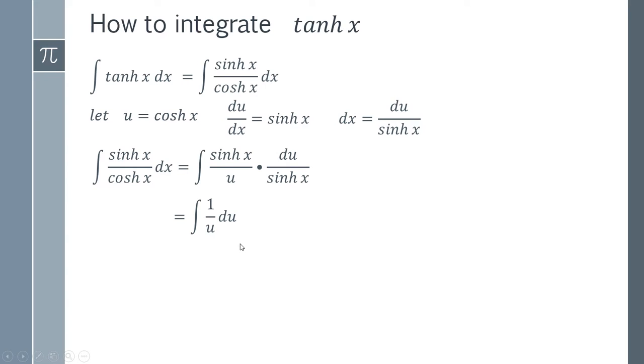This is, of course, your natural logarithm, because one over u is your natural logarithm of u. And so we said that u equals cosh x. And so we can replace this with cosh x, and we end up with our final answer here.